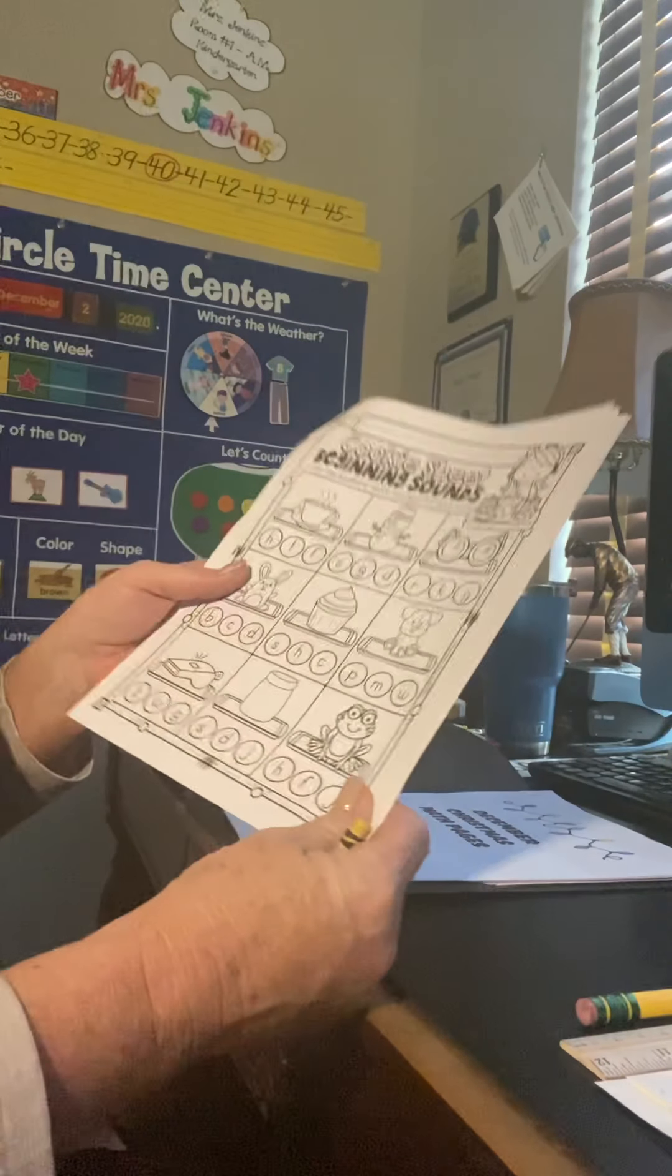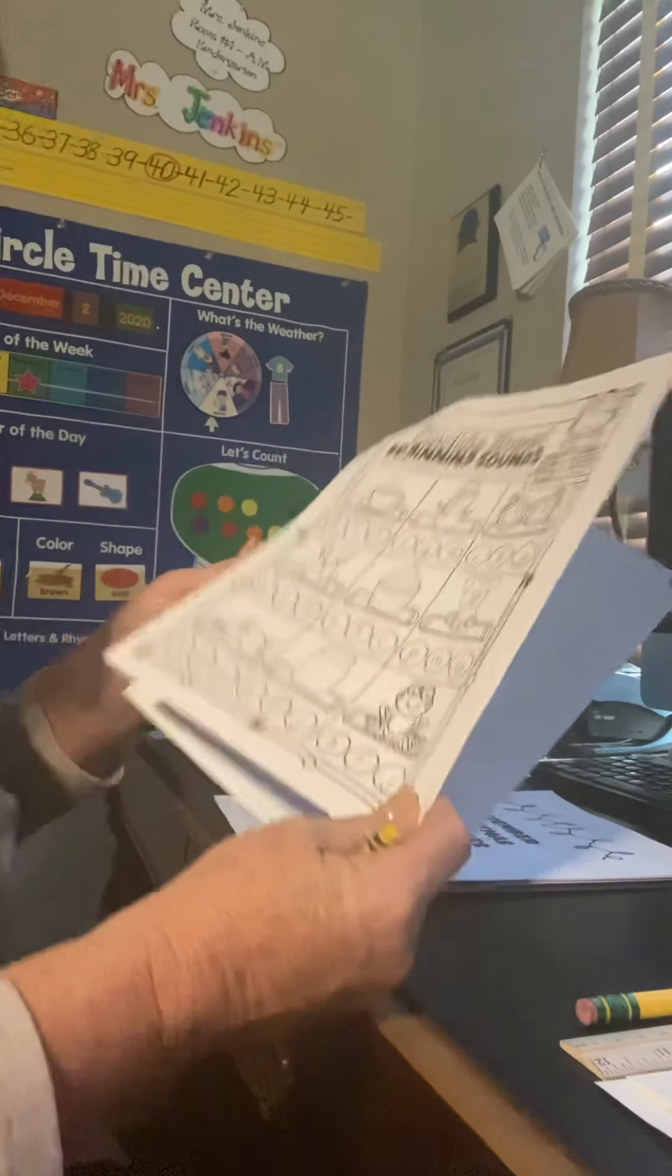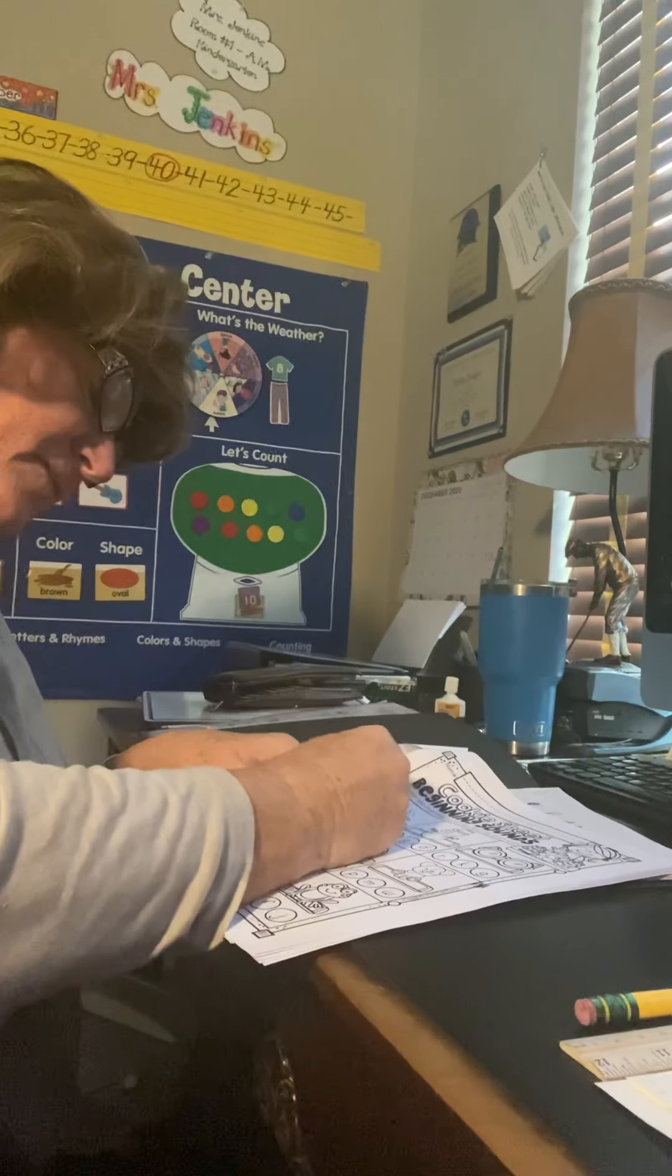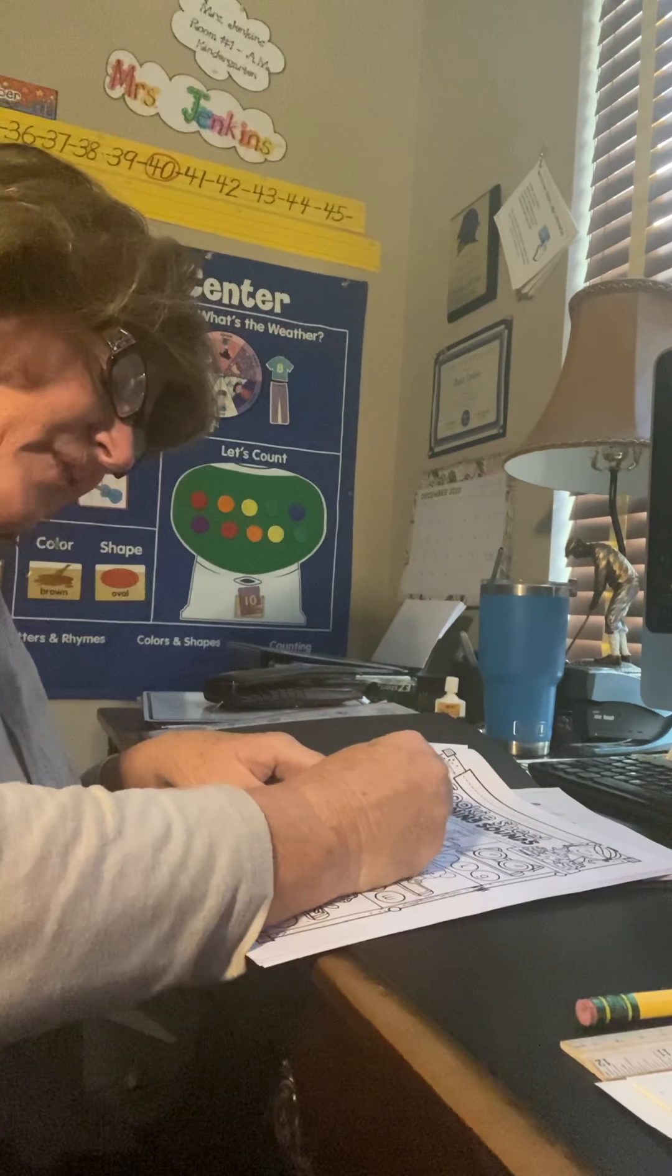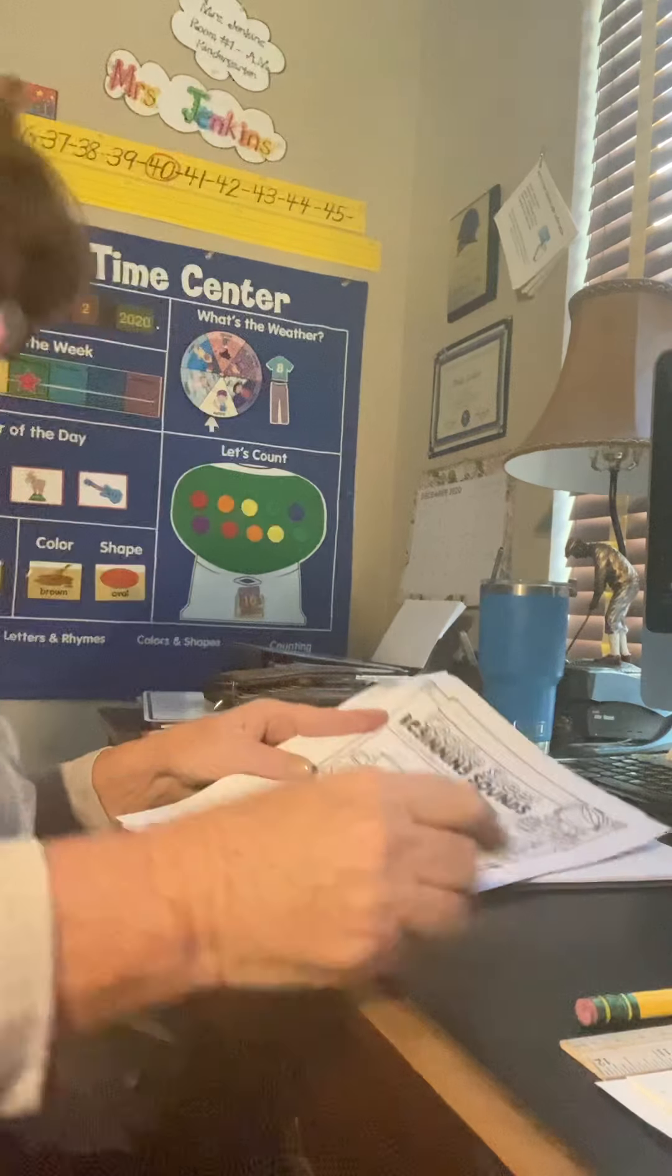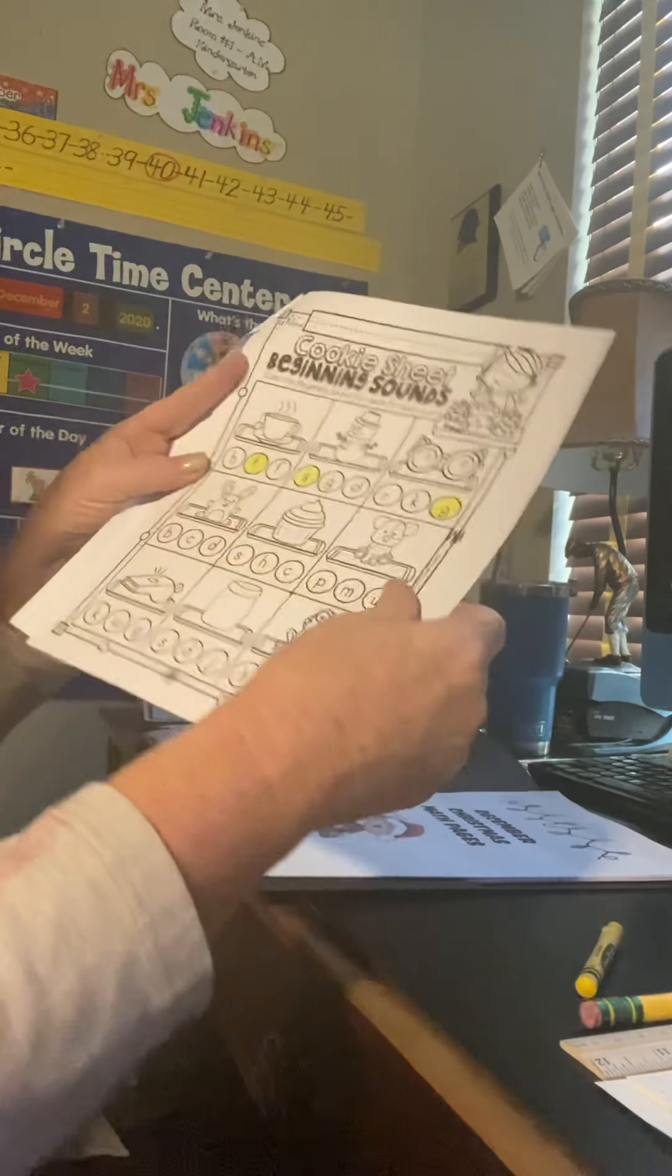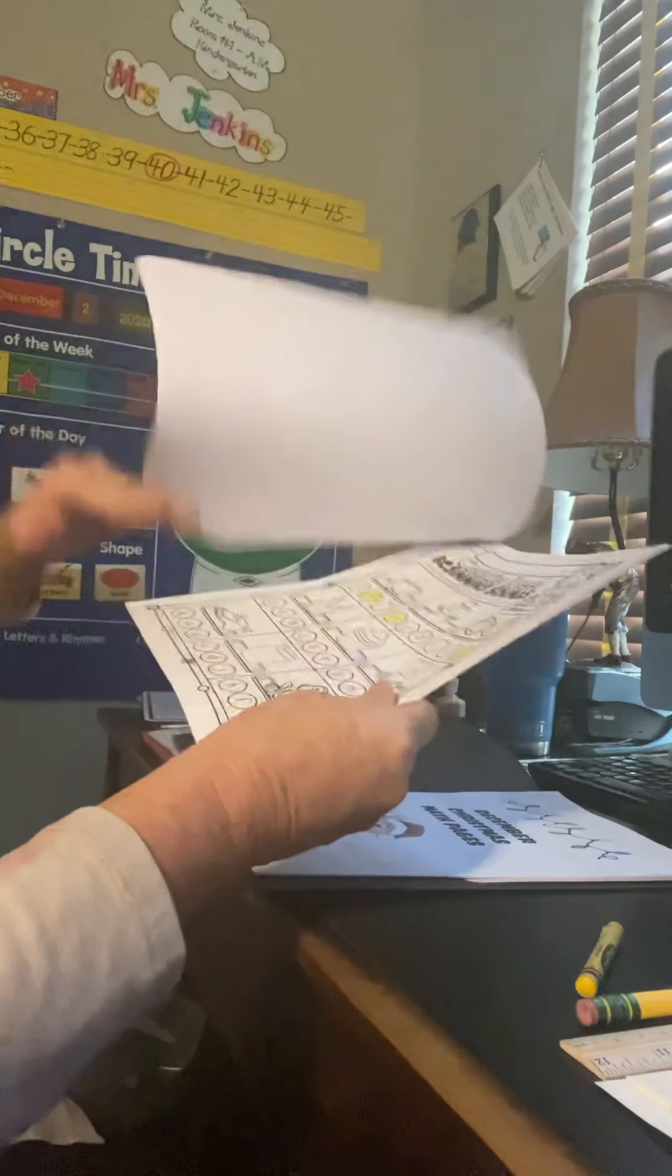So we've got two pages of isolating beginning sounds. This is going to help us for the tests that we're doing next week. And again, you can just take one color if you want. Just color the one that it starts with. You don't have to X out the other ones. Now, if you want to color the little pictures for fun, some of you guys love to color and some of you guys are just excellent colors. If you want to color the little pictures, you can, but I'm going to say that's optional. Okay. Okay. Have fun with your beginning sound pages.